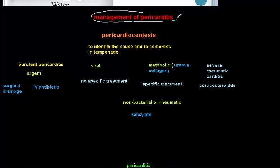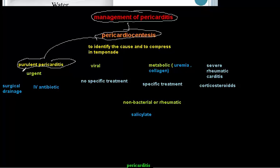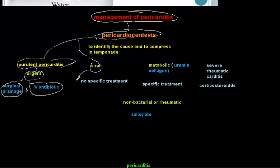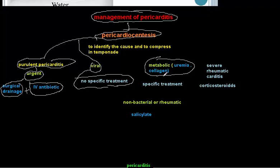Management begins with pericardiocentesis to identify the nature of the fluid. If the fluid is purulent, it indicates bacterial pericarditis — requiring urgent surgical drainage and IV antibiotics. For viral pericarditis, there is no specific treatment. For metabolic disorders like uremia or collagen disorders causing chemical irritation, the underlying metabolic disorder must be specifically treated — for example, treating renal failure causing uremia.